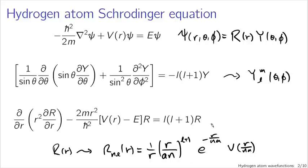So we have a complete mathematical description. This 'a', incidentally, is the Bohr radius — a length of about half an angstrom if you plug in the actual values of the constants.